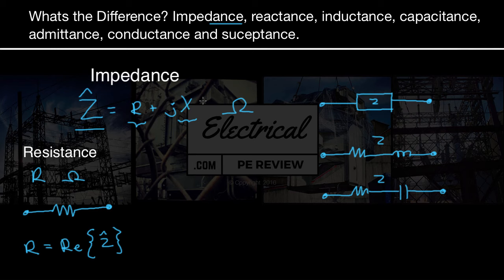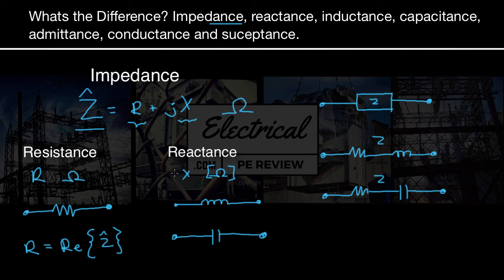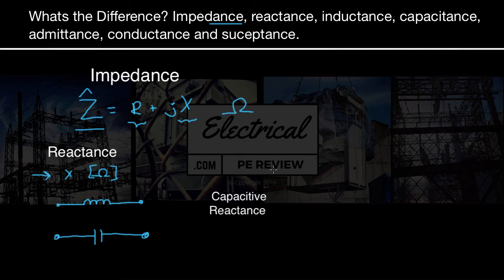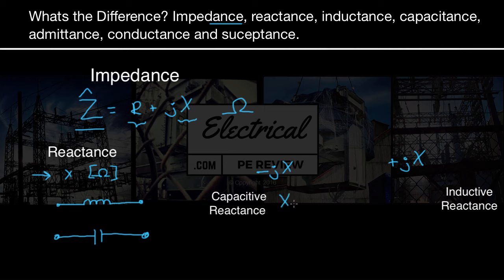Next we have X — reactance. X is also in the unit of ohms, and it's going to look like either an inductor or a capacitor. We have two different types of reactance: capacitive reactance, which is negative jX, and inductive reactance, which is positive jX. For capacitive reactance we typically see the notation X subscript C, and for inductive reactance we use X subscript L. Capacitive reactance is shown as a capacitor, and inductive reactance is shown as an inductor.